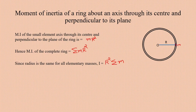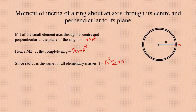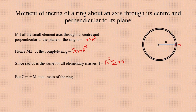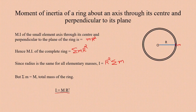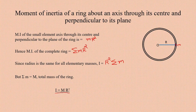Σm is the total mass of the ring. Therefore, the moment of inertia of the ring about the axis passing through the center and perpendicular to its plane is I = MR².